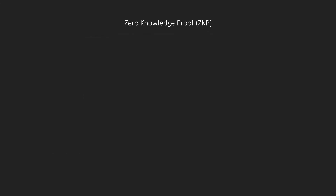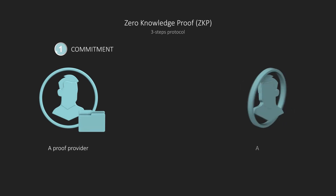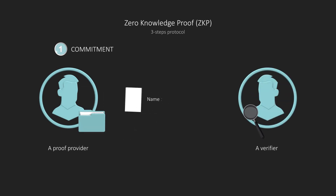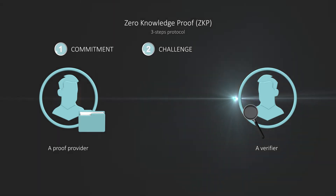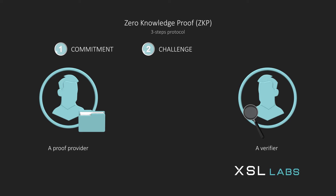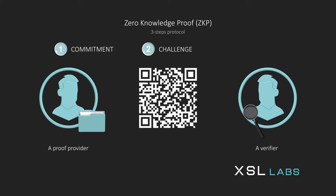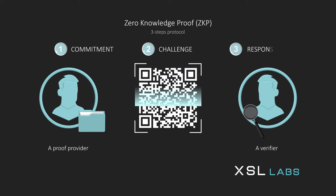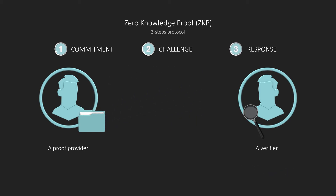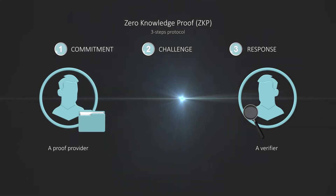ZKP generally consists of a three-step protocol. The first step is commitment, where the proof provider tells the verifier that he can prove the veracity of an information. Then, a challenge is issued by the verifier to the proof provider. In the case of XSL Labs, this could take the form of a QR code containing the challenge, which must then be scanned by the proof provider in order to proceed to the final step, the response, which consists of the proof provider sending the response to meet the challenge.